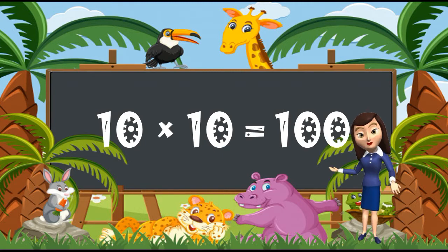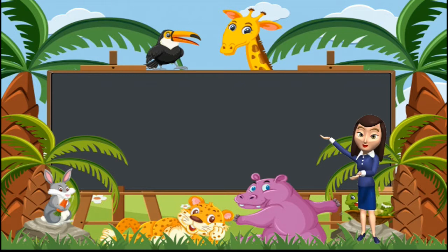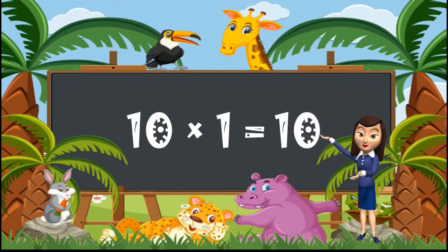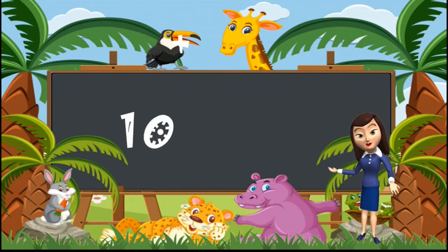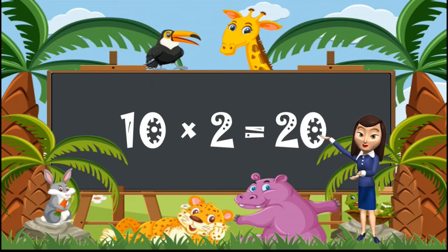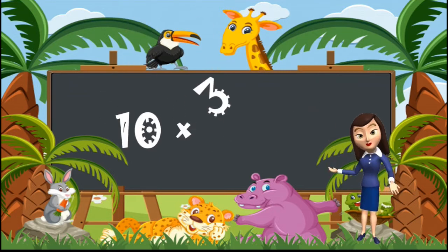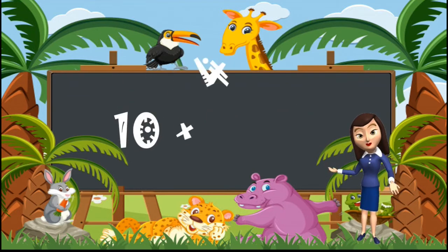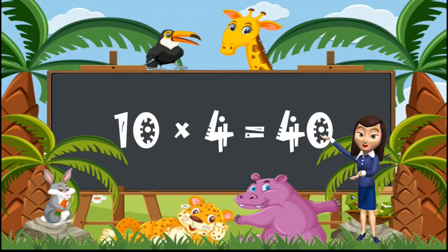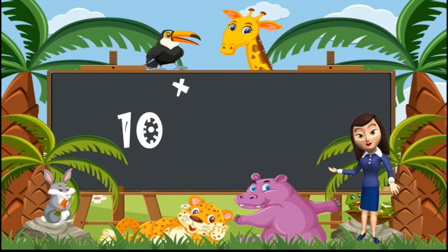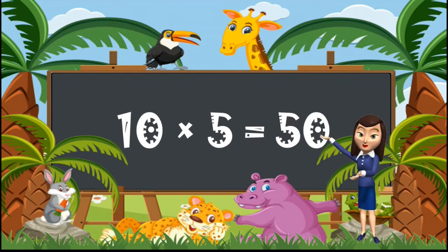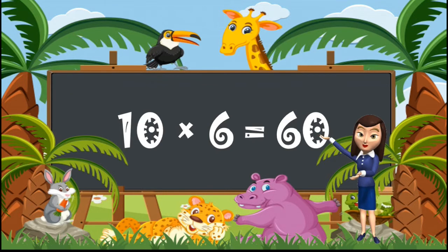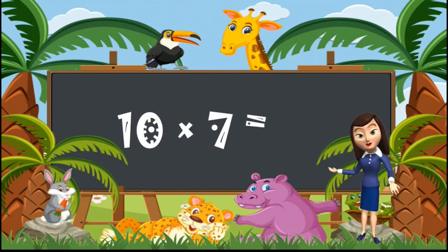We will repeat it once again. Let's start. 10 ones are 10. 10 twos are 20. 10 threes are 30. 10 fours are 40. 10 fives are 50. 10 sixes are 60. 10 sevens are 70.